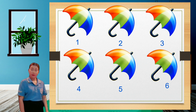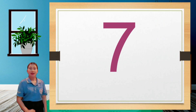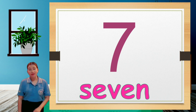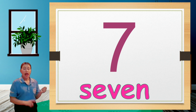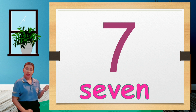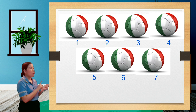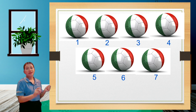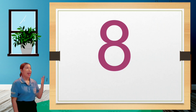Next is number seven. Spell seven: S-E-V-E-N — seven. Let's count: one, two, three, four, five, six, seven — there are seven umbrellas. Next to number seven is number eight. Spell eight: E-I-G-H-T — eight. Let's count the ice creams: one, two, three, four, five, six, seven, eight — there are eight ice creams.